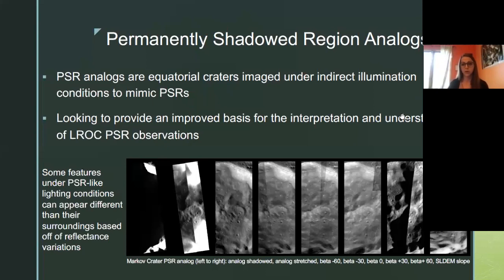This is important to us because it's providing an improved basis for the interpretation and understanding of LROC PSR observations. This is going to help us with future missions going to the moon. We are sending up a different camera system called ShadowCam that's going to image specifically PSR areas. So this is helping us understand what we're going to be looking at when we send that camera up. This picture is just an example of some of the ways that we're looking at these images — the first two images are the analog that is shadowed and stretched, and the next five images are that same crater under direct illumination under different beta angles.